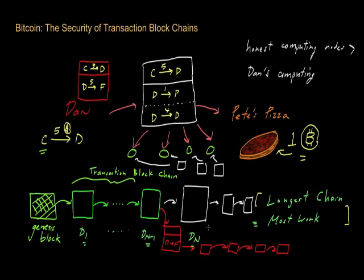Bitcoin miners who solve proof-of-work puzzles get both a reward for succeeding — they get some number of Bitcoins — and they also get a transaction fee for all the transactions in the block that they validated.